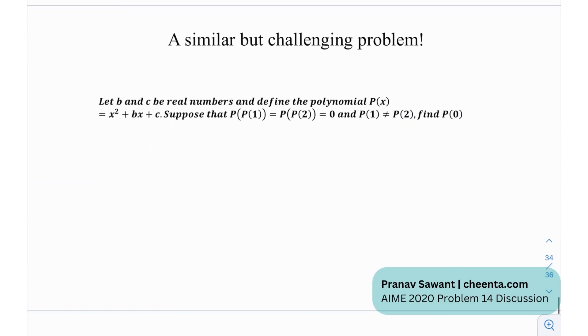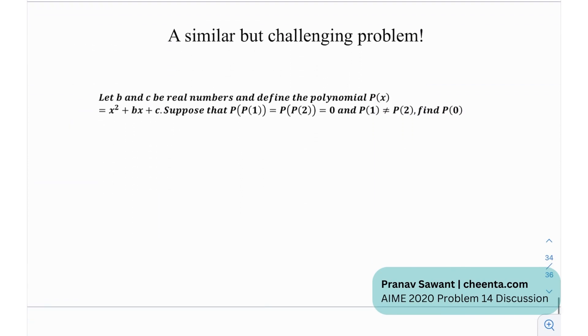Now at the end I have a similar but challenging problem for you. And this is in a way very closely related with that original problem. This is stating that let B and C be real numbers and define the polynomial P of X equals X squared plus BX plus C. Suppose that P of P of 1 equals P of P of 2, and it is given that P of 1 is not equal to P of 2. So find P of 0. So this is quite an interesting problem as well. It's very closely related with the one I solved. So if you've thoroughly understood my explanation, then you should have a good crack at this.